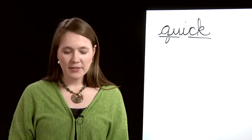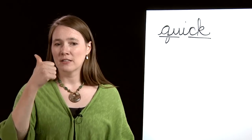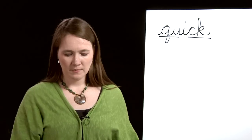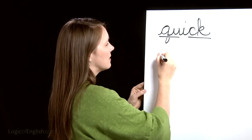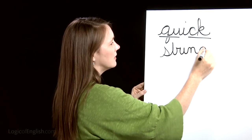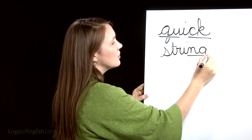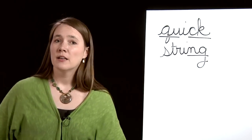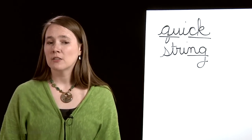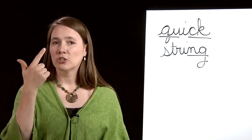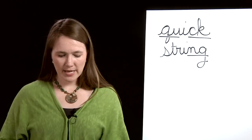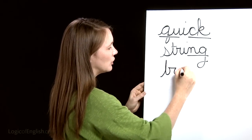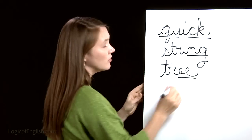The second word is 'string' — tie the string on your finger. Let's sound it out: s-t-r-ĭ-ng. Go ahead and write it. We'll underline the 'ng.' The third word is 'tree' — the big tree is bending in the wind. Let's sound it out: t-r-ē. This is EE, double E. Go ahead and write it. We'll underline the EE double E.